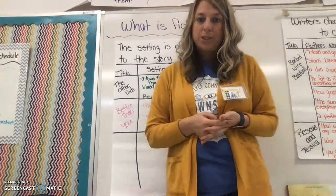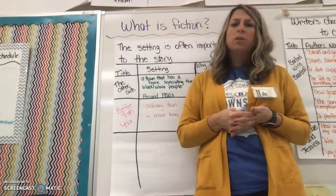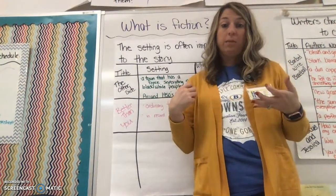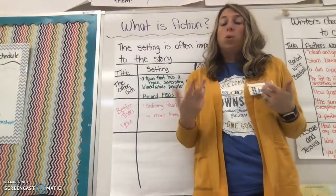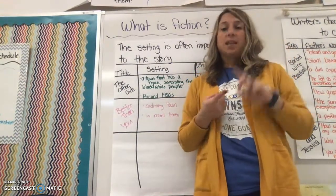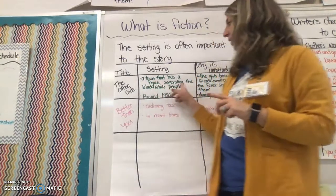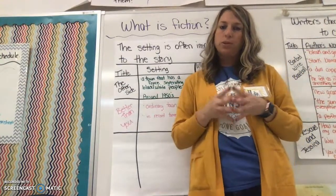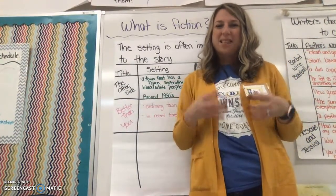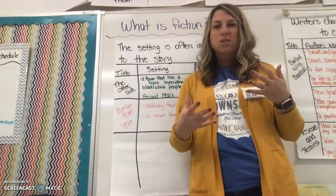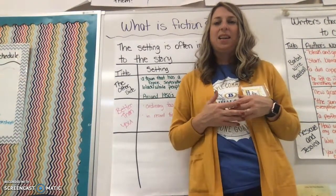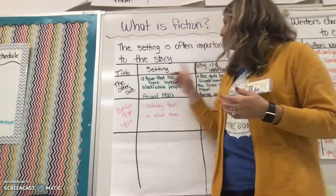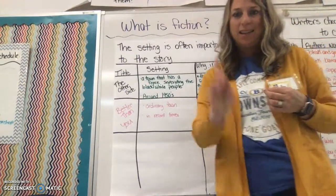So today what you're going to do is think about a book that you've been reading, and you're basically going to fill this chart in with a book you've read — or two, I haven't decided. You're going to tell us the title of the book, you're going to tell us the setting, and then why is that setting important to the story? How does that setting help me better understand the story and its details? Why is that setting important?